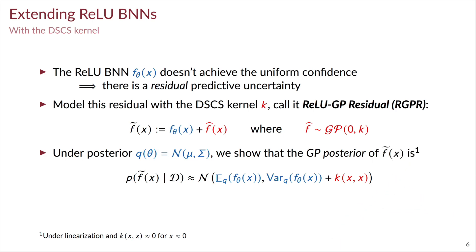It turns out if we already have a pre-trained Bayesian neural network, the posterior of RGPR takes a very simple form as you can see in the slide.